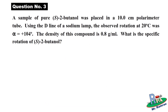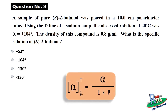Question number three: a sample of pure S-2-butanol was placed in a 10-centimeter polarimeter tube. Using the D line of a sodium lamp, the observed rotation at 20 degrees Celsius was 104 degrees. The density of this compound is 0.8 grams per mL. What is the specific rotation of S-2-butanol? Your options are provided. Use the formula with density since the density of the liquid is given — don't make the mistake of multiplying by 100. Pause the video and try to solve it.